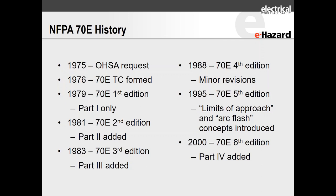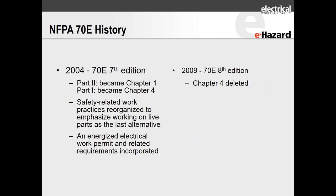In 1995, it really started to take on more value. Limits of approach and arc flash concepts were introduced — it was becoming evident that arc flash energies needed to be taken far more seriously. In 2000, part four was added. In 2004, it was a really valuable edition: parts were reorganized, and safety-related work practices were reorganized to emphasize working on live or energized parts as a last alternative, which remains one of the most important tenets of 70E — working in a de-energized state. An energized electrical work permit and related requirements were incorporated in 2004.